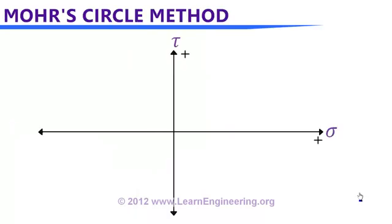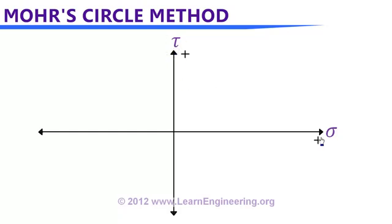Let's see how to use Mohr's circle analysis to solve this problem. The first step in the Mohr's circle method is to draw two axes: one for normal stress, which is horizontal, and another for shear stress, which is vertical. The positive directions of the axes are as shown, and the negative directions are in the opposite way.